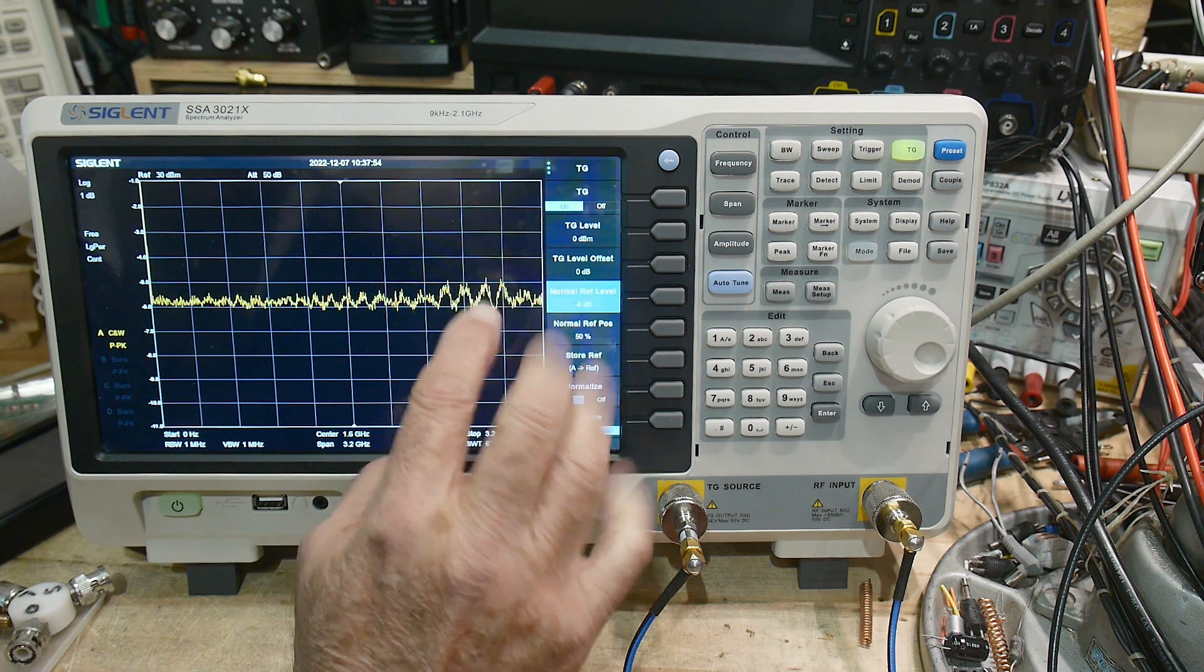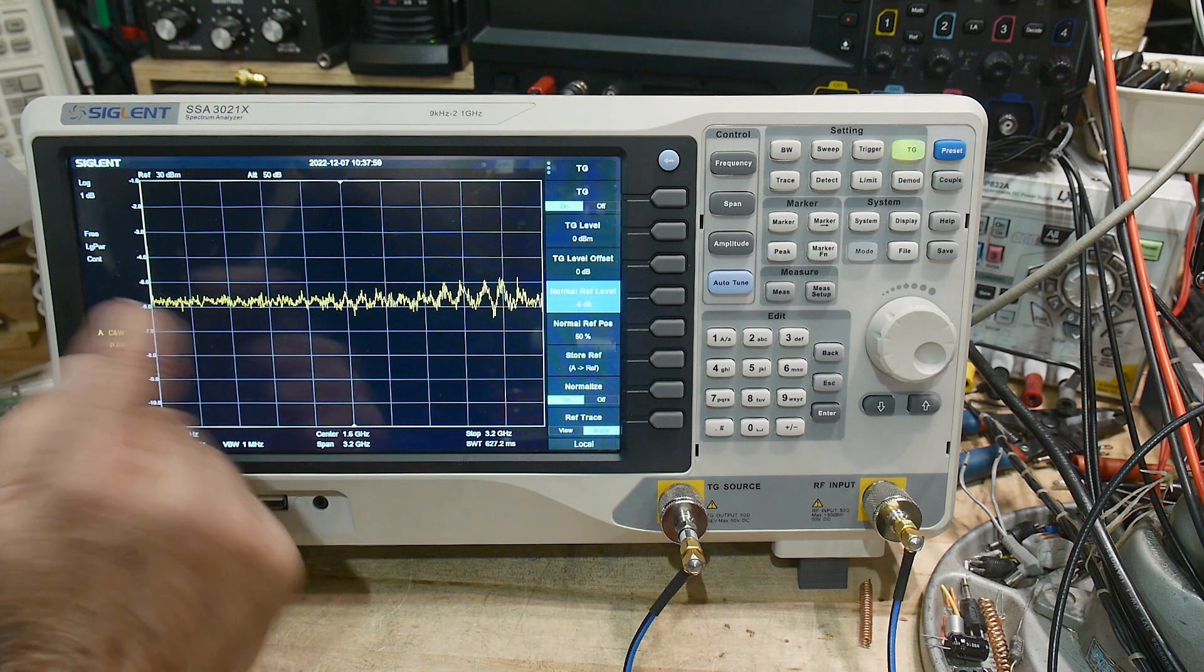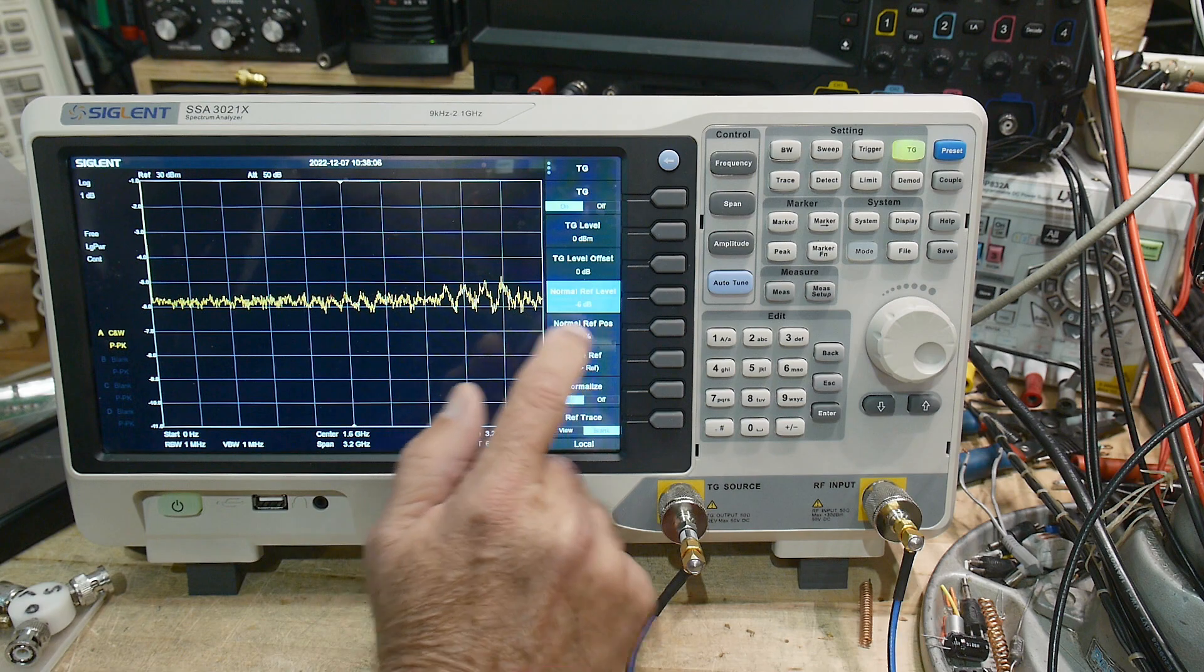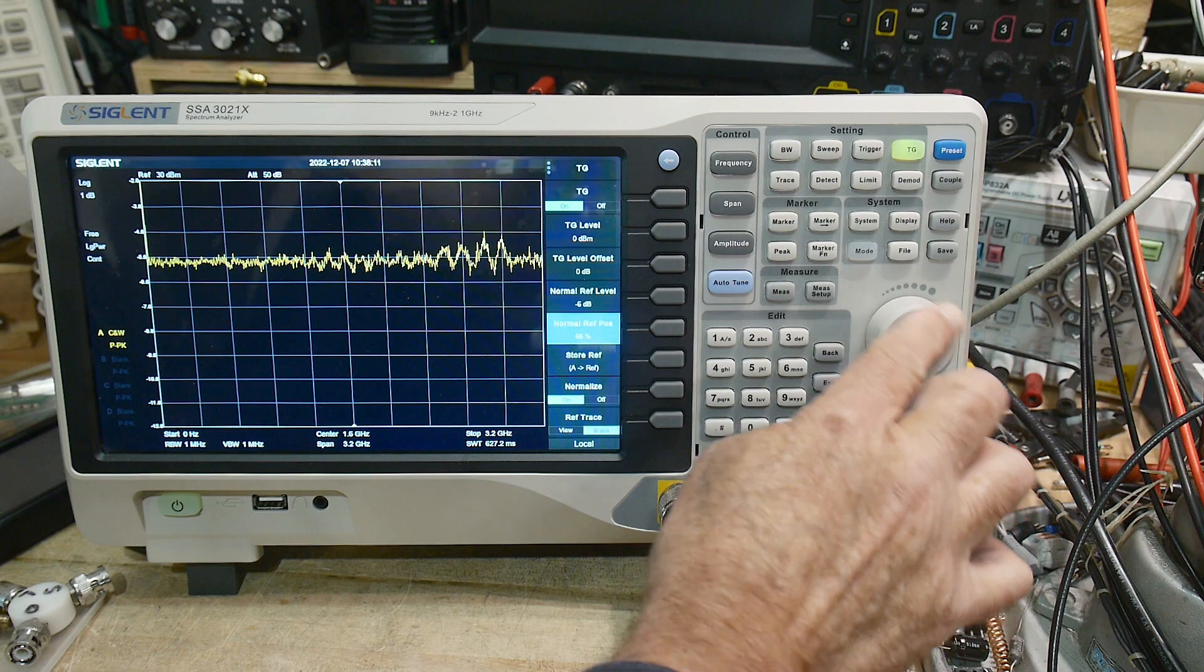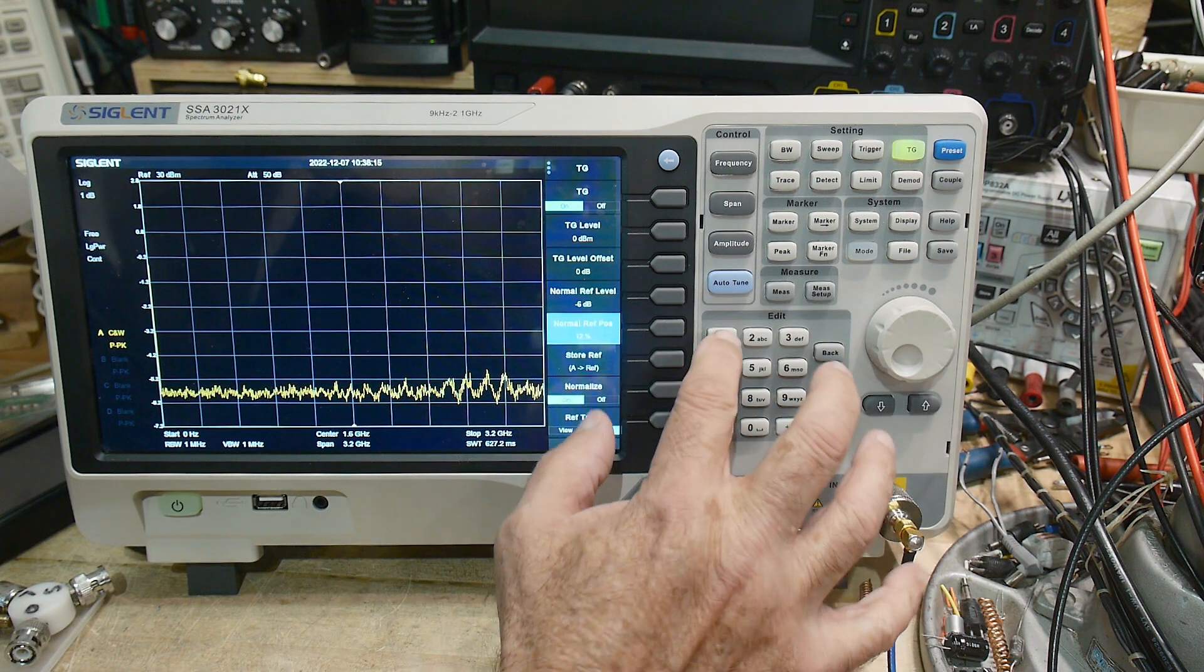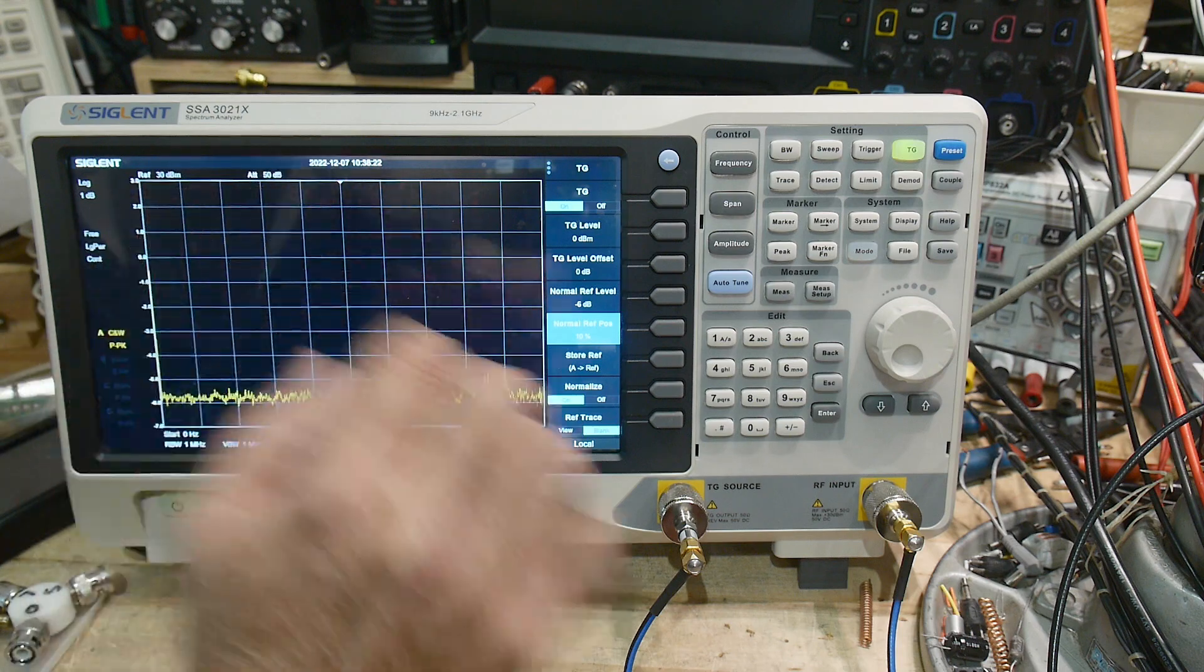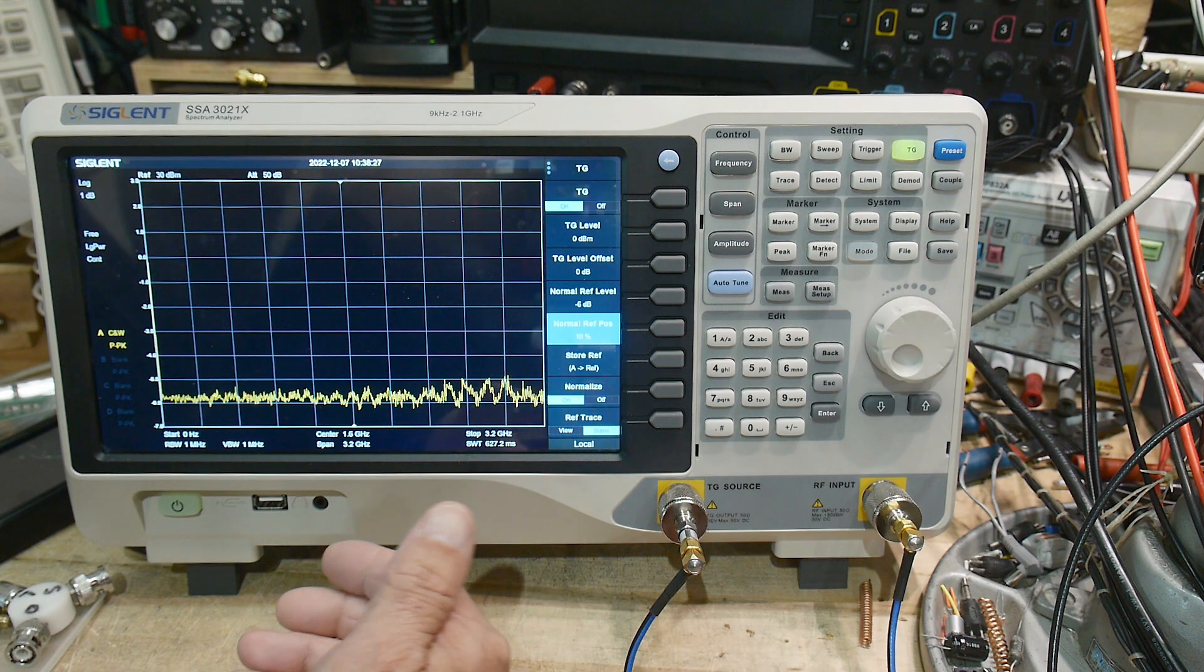It's a bit confusing on this particular one. The reference level is what value do you want this A minus B thing to happen at. We want it to happen at minus 6. Then the reference position is where on the screen do we want it. This just moves it up and down. This percentage means if we set it to 10, it's 10% of the way up. If we want that up at the top, we would say 100%.